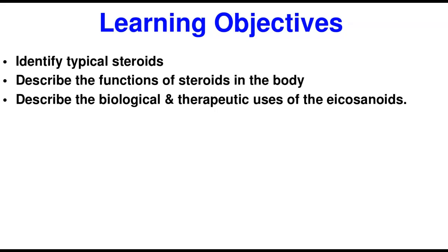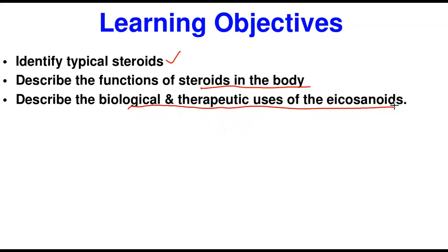The learning objectives we intend to cover today include: number one, we're going to identify a typical steroid — what is the basic unit of every steroid? Number two, we'll describe the functions of steroids in the body. And lastly, we'll describe the biological and therapeutic uses of eicosanoids.